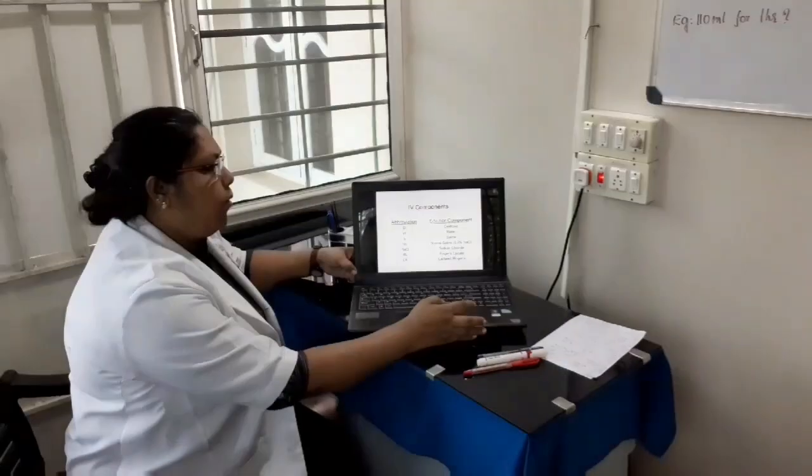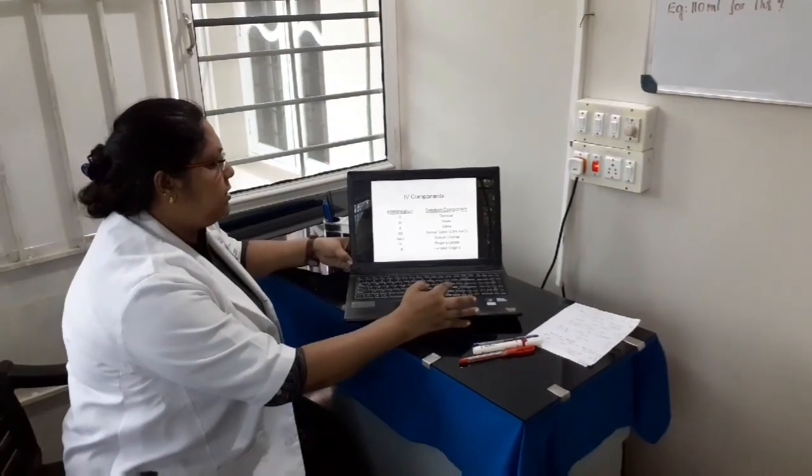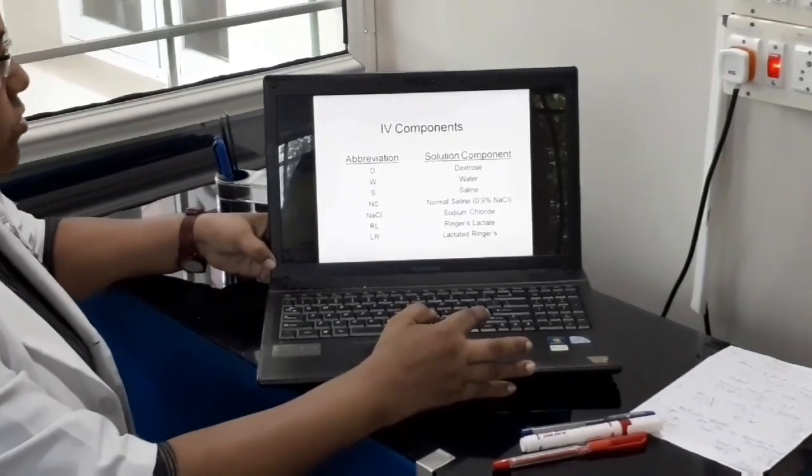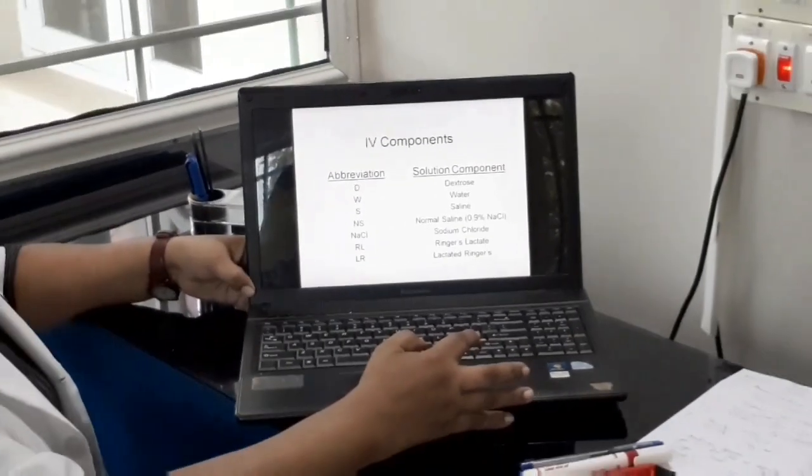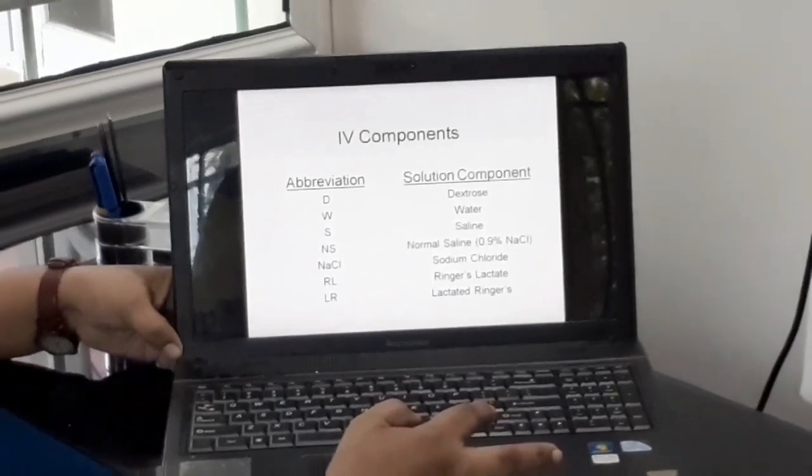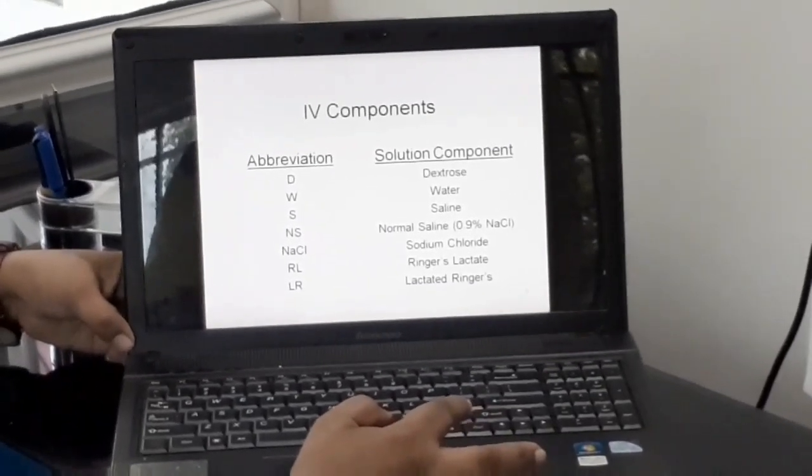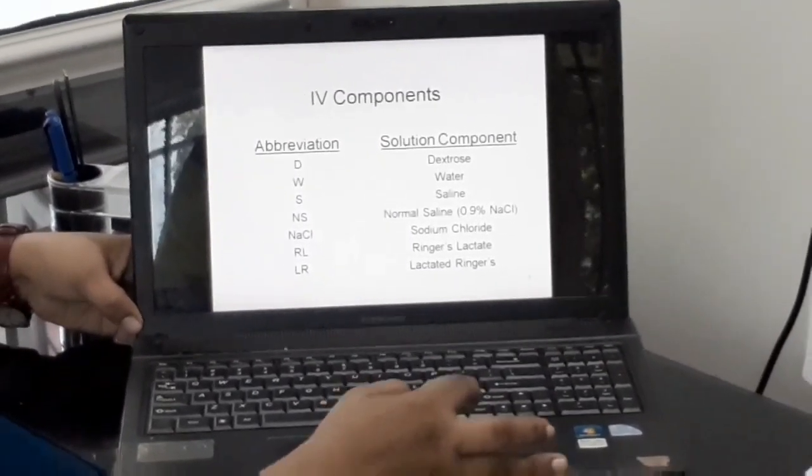The abbreviations commonly used for intravenous fluid administration: D stands for dextrose, W for water, S for saline, NS means normal saline, sodium chloride NaCl, and RL for Ringer's Lactate.